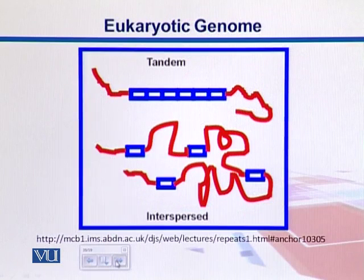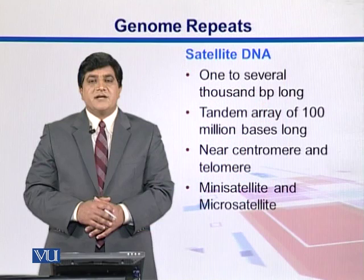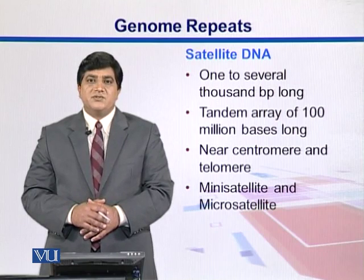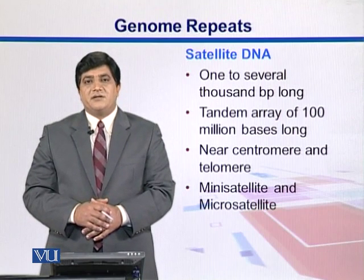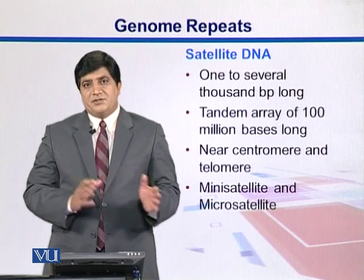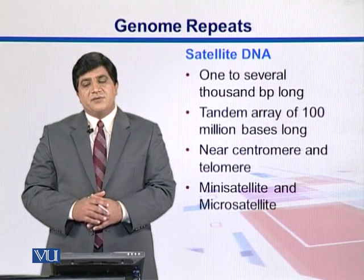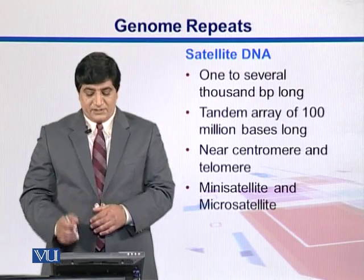Here is an example showing types of repeats. Repeats can be tandem, where they are arrayed together, or interspersed, where repeats are separated by normal genomic sequence. Satellite DNA may be one to several thousand base pairs long and can be present as a long tandemly repeated region of millions of base pairs. They are present near the centromeres and can be classified as mini- and microsatellites.